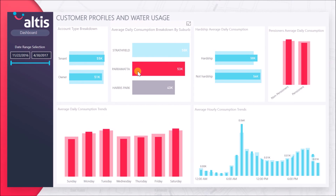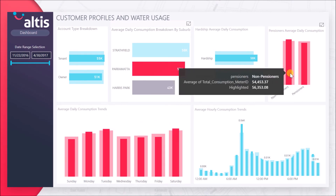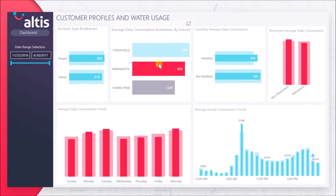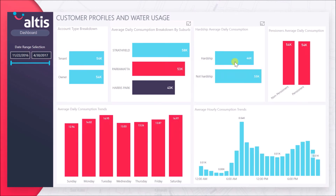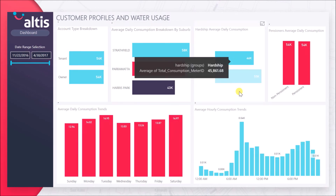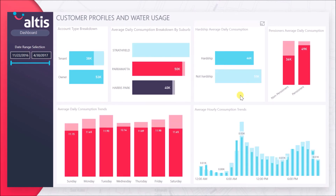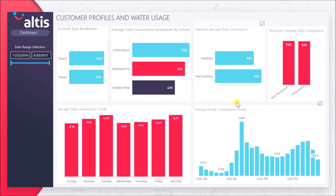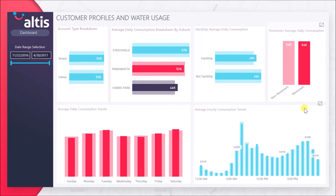With our solution you can view consumption breakdowns via account type, suburb, hardship, and pensioners, as well as hourly and daily trends for these groups. Through this page you can find relationships between customer water consumption and different factors.